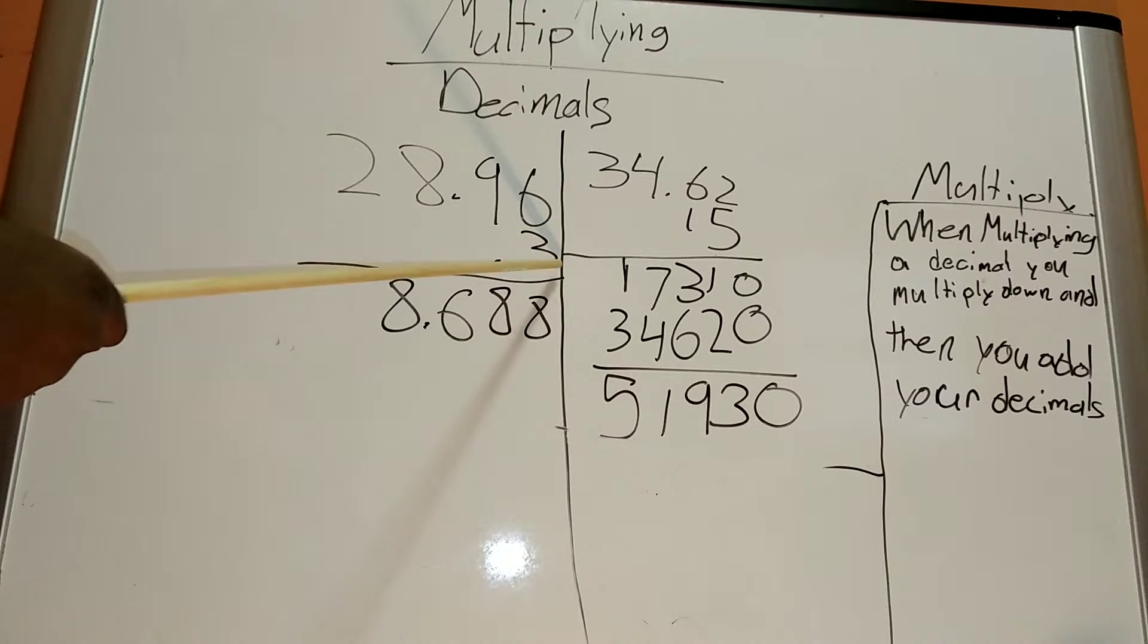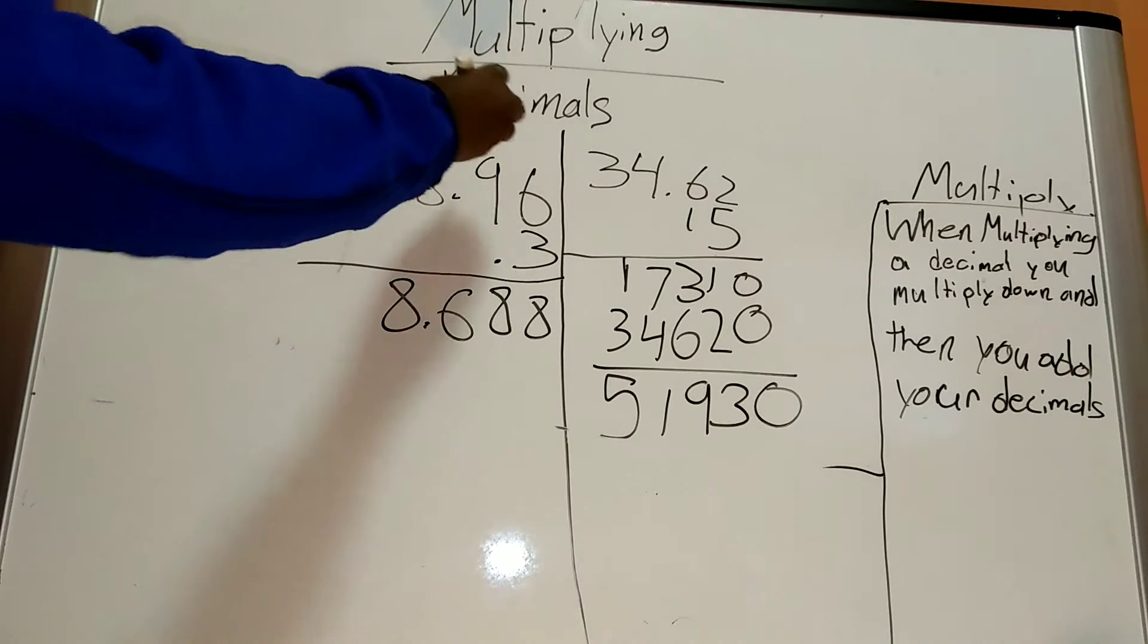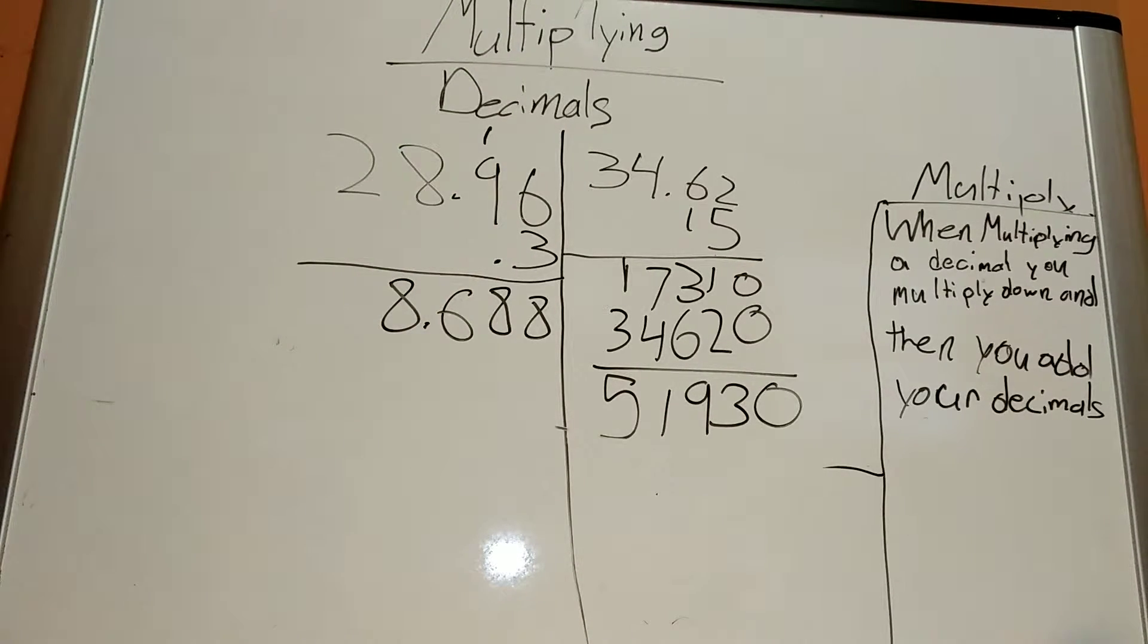So, then you do 6 times 3, which equals 8. You put the one here. Then, you do it again. 3 times 9 equals 28. Put the 8 there. Put the 2 here. Then, 3 times 8 is 24.